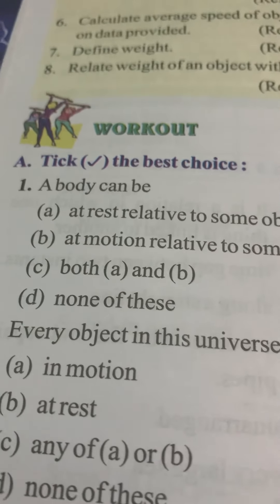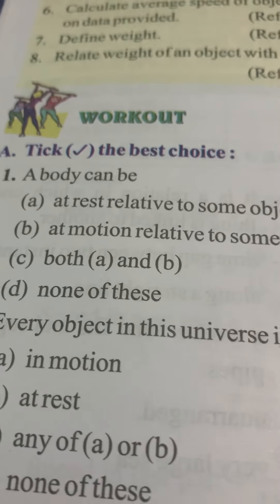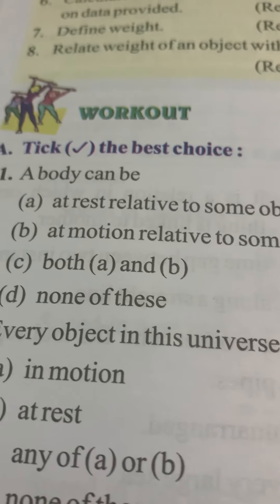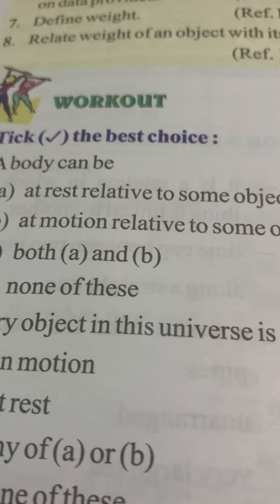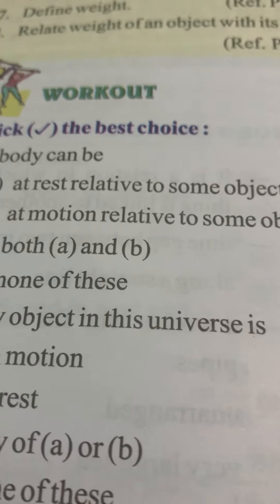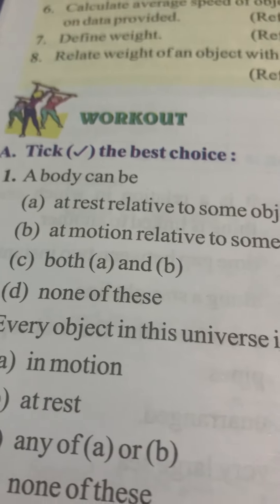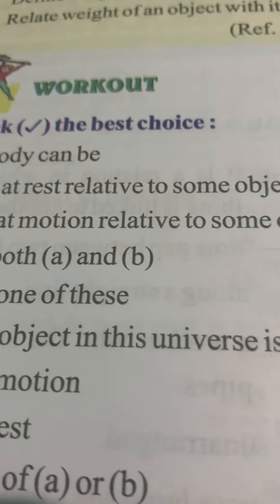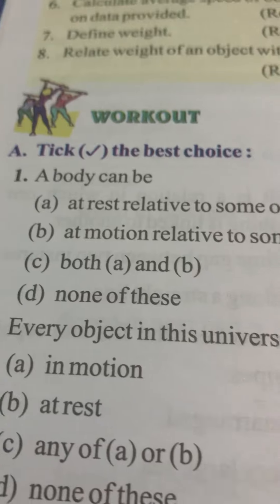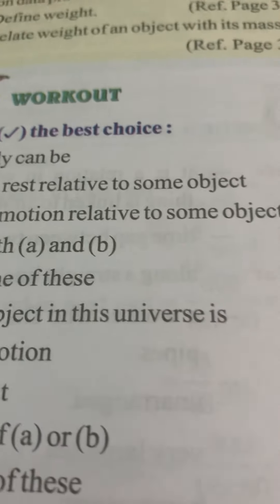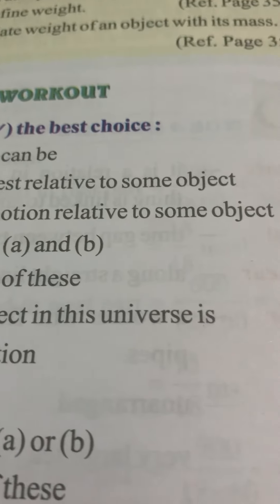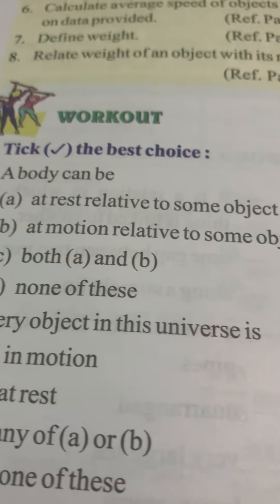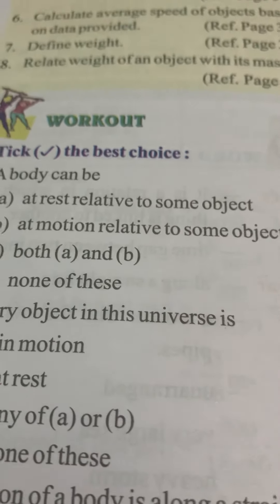Your friend is behind you — who is in motion? But relative to you, your friend is behind you — who is at rest? Because he doesn't move. So this means a body can be at rest and it can be at motion. So the answer will be C, both A and B.